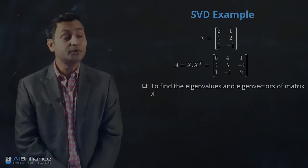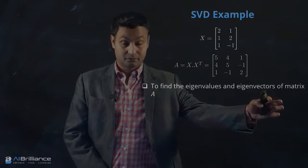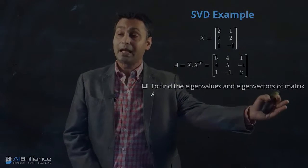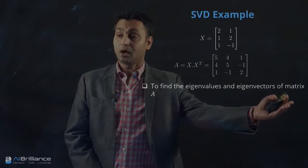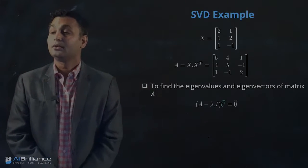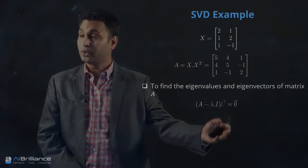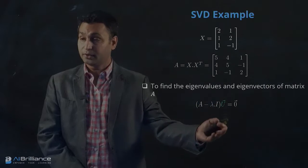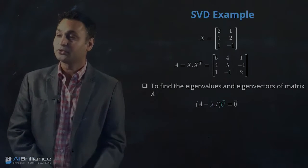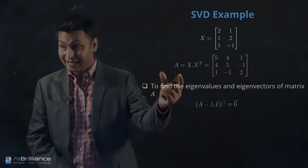Then what we do is we use the eigenvalue and eigenvector method, and we find out the eigenvalues and eigenvectors of matrix A. We have talked about how to do eigenvalue and eigenvectors in one of the previous lectures. So essentially we are solving the eigenvalue problem for matrix A.